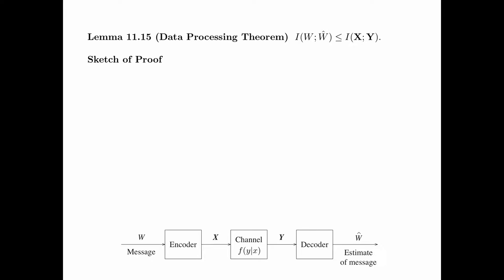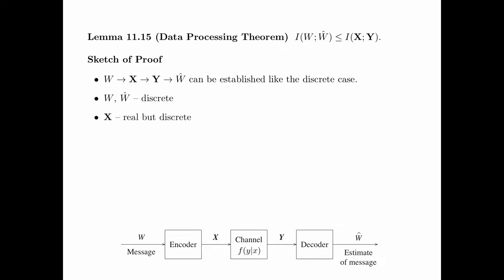Here's the sketch of the proof. Like in the discrete case, the Markov chain W, X, Y, W-hat can be established. W and W-hat are discrete random variables. The random sequence X is real but has a discrete distribution. The random sequence Y is real and it has a continuous distribution.